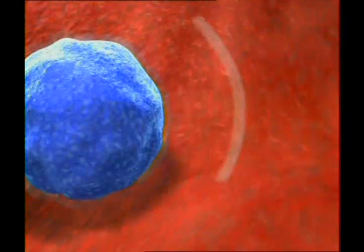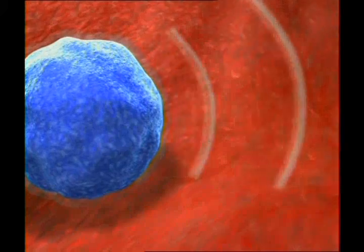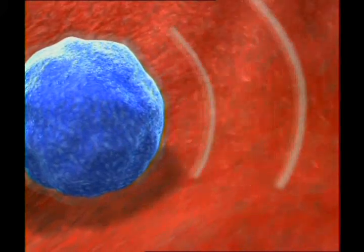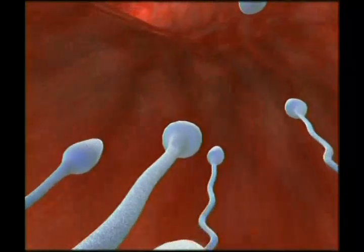The sperms find the way to the egg because another perfectly created biological system comes into action. The egg gives off a chemical signal to attract the sperms, which are about 15 centimeters away from it. The sperms head straight to the egg thanks to this signal.